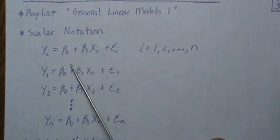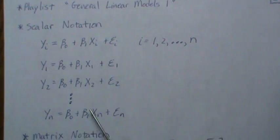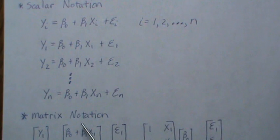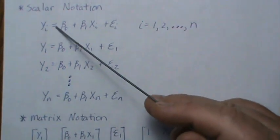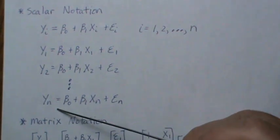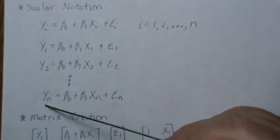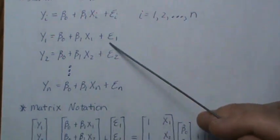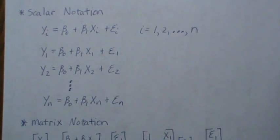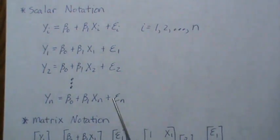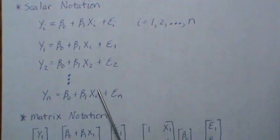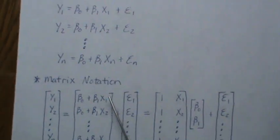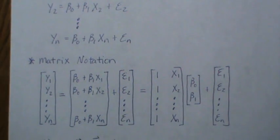What we want to do is have a better way to handle this, so we're going to introduce matrix notation. Think of the equal sign as a dividing point — we can quarantine the left side, the error terms go to the side, and then we'll deal with the middle. So we're going to group them.